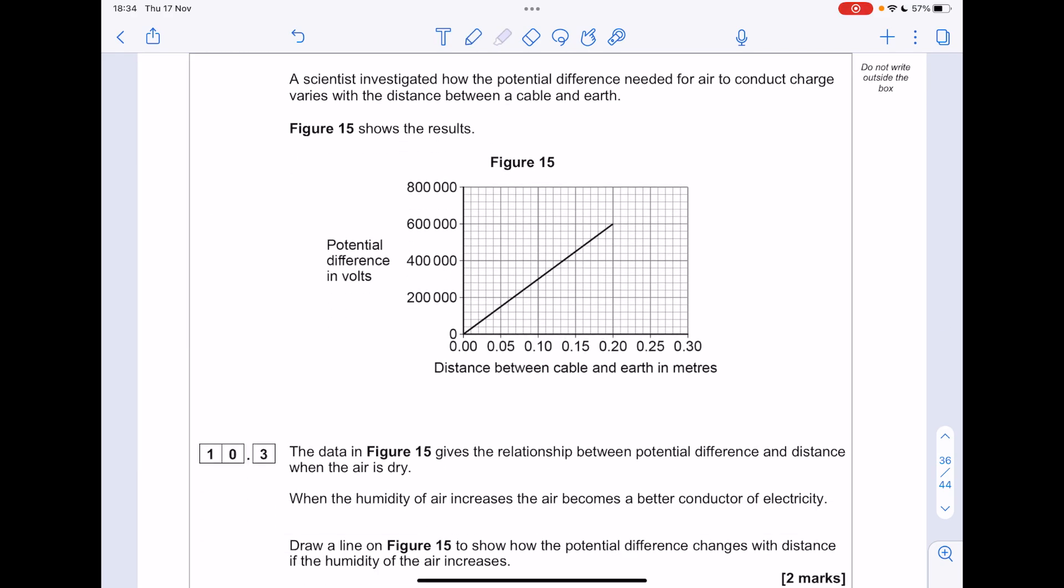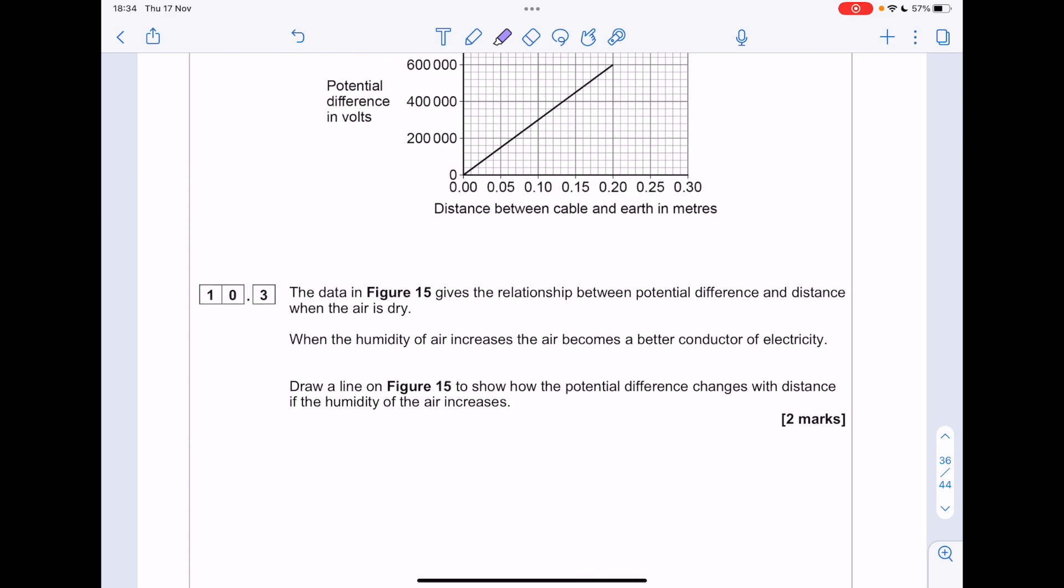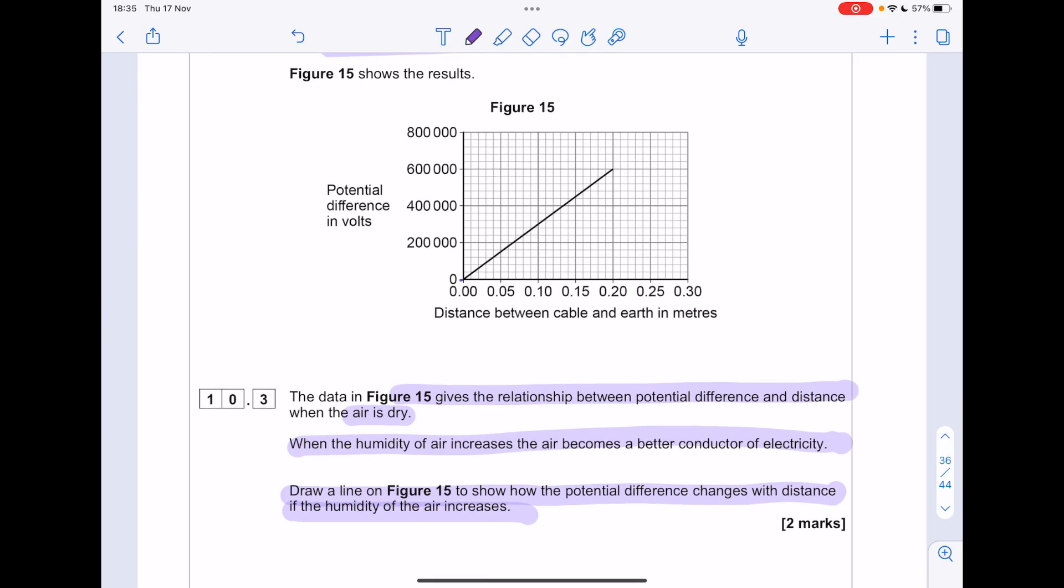The scientist investigated how the potential difference needed for the air to conduct charge varies with the distance between the cable and the earth. The data in figure 15 gives the relationship between potential difference and distance when the air is dry. When the humidity of the air increases, the air becomes a better conductor. Draw a line on figure 15 to show how the potential difference changes with distance if the humidity of the air increases. So we know it's a better conductor. So we'll start at zero, so it's a directly proportional relationship still. We'd expect the potential difference to decrease for the same values of distance.